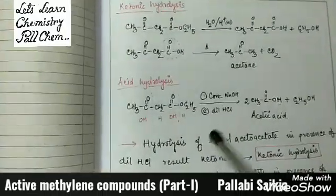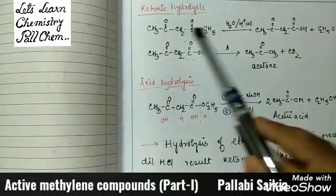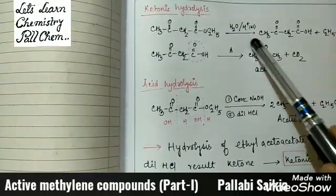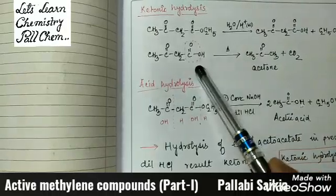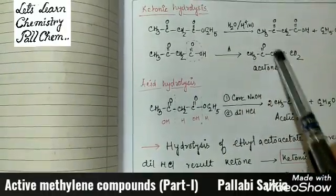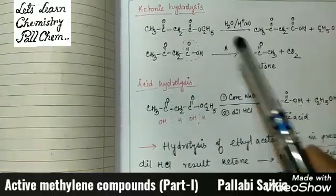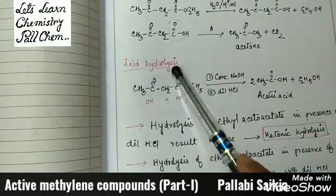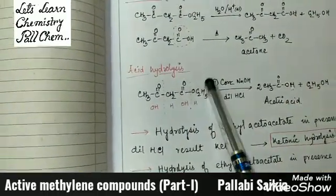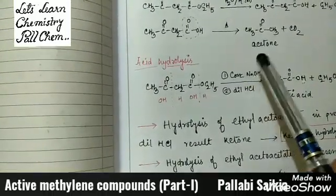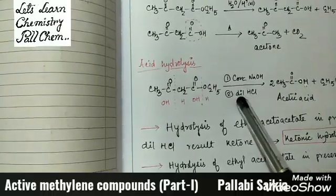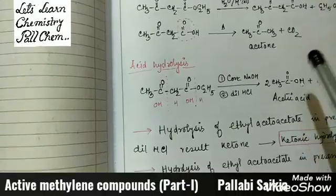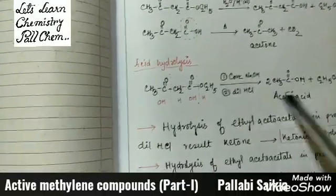In ketonic hydrolysis, when ethyl acetoacetate is treated with dilute HCl, acetoacetic acid is formed. This acetoacetic acid loses carbon dioxide when heated, forming acetone. This reaction is known as ketonic hydrolysis since the product is a ketone. In acid hydrolysis, when ethyl acetoacetate is treated with concentrated sodium hydroxide followed by an acid reaction, the product is acetic acid.